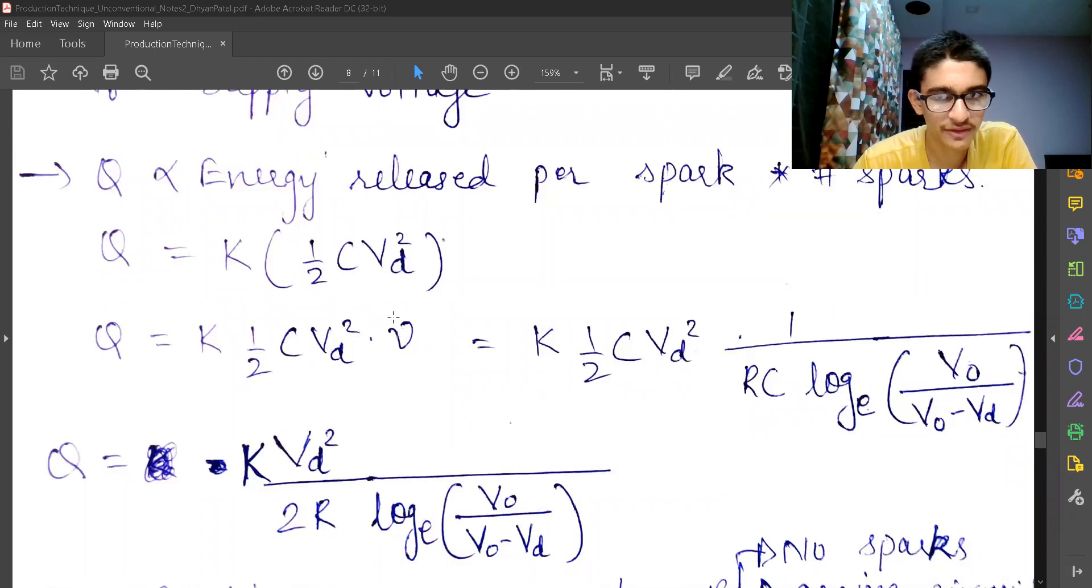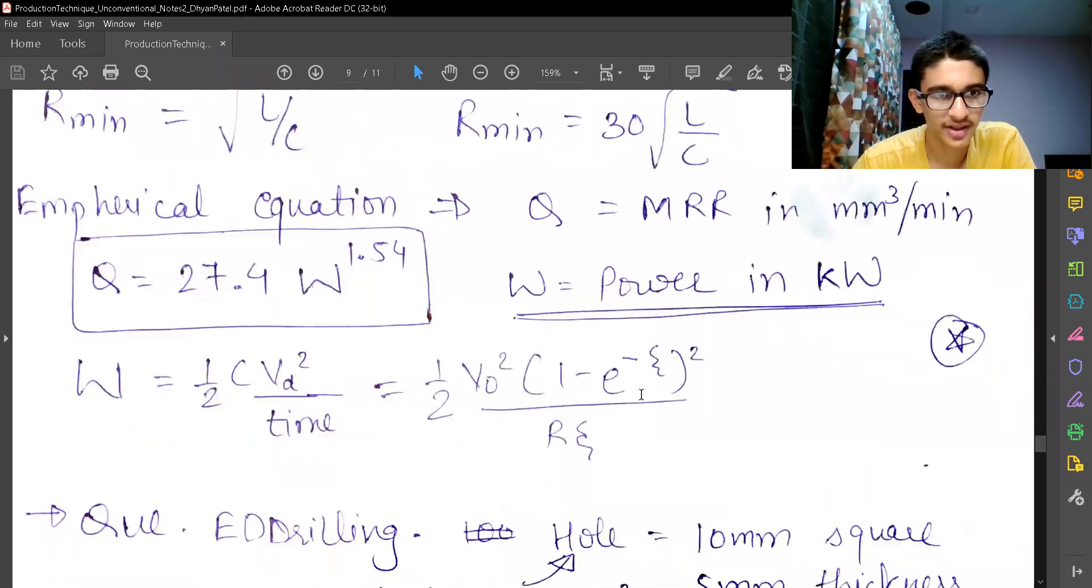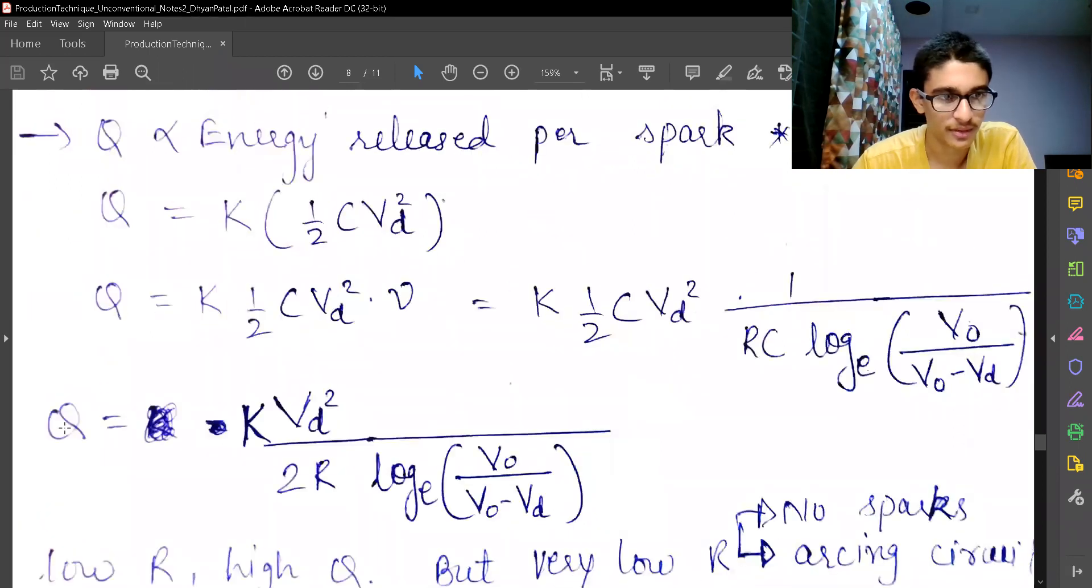So now I'm just substituting the frequency value as one upon time period, the time for discharging. The time for discharging was derived in the earlier video. So I have the expression for that volume, which will be KVd square upon 2R into natural logarithm of V0 upon V0 minus Vd.